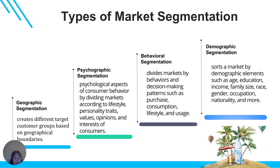We also have psychographic segmentation, which is based on the psychological aspect of consumer behavior. It divides the market according to lifestyle, personality traits, values, opinions, and interests of the consumer. Behavioral segmentation divides the market into different decision-making patterns such as how they purchase, consumption ability, usage, and lifestyle. Demographic segmentation is based on categories like age, family size, education, income, race, gender, occupation, nationality, and more.